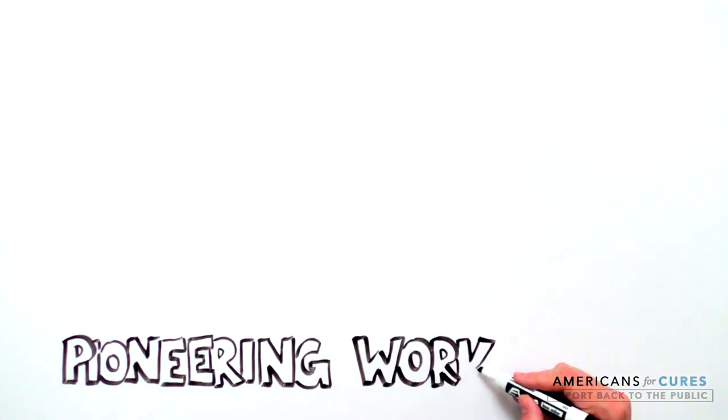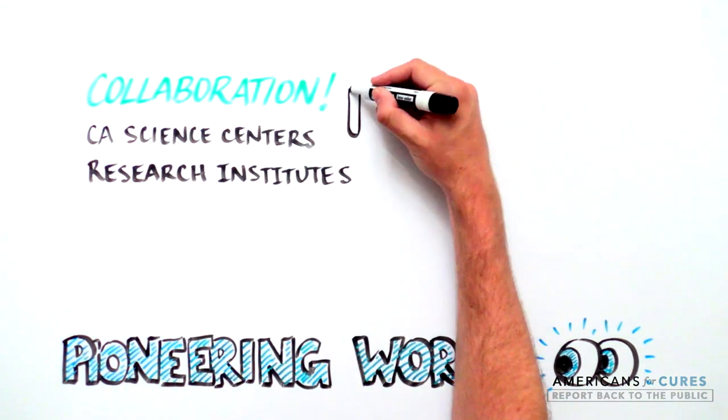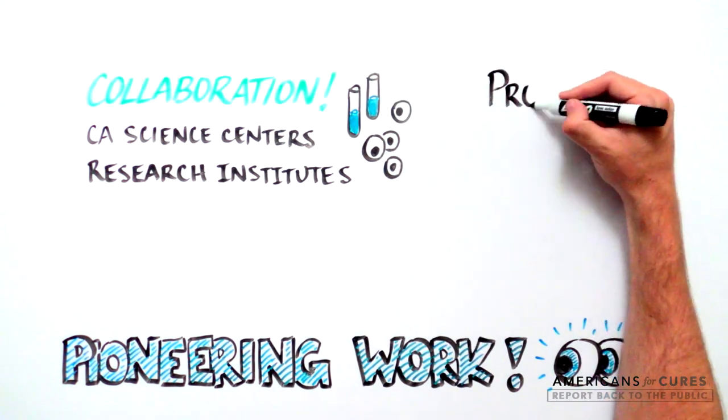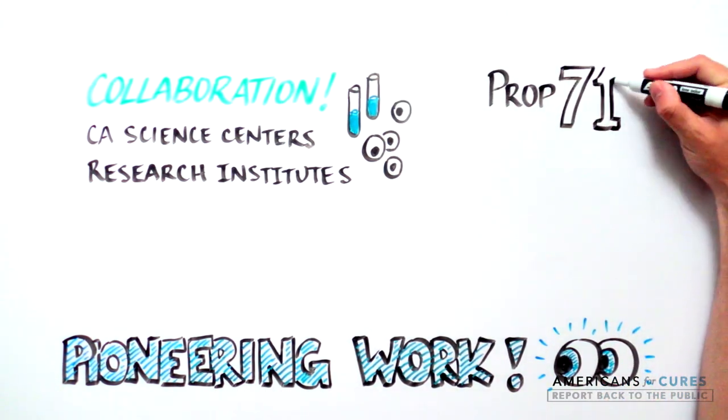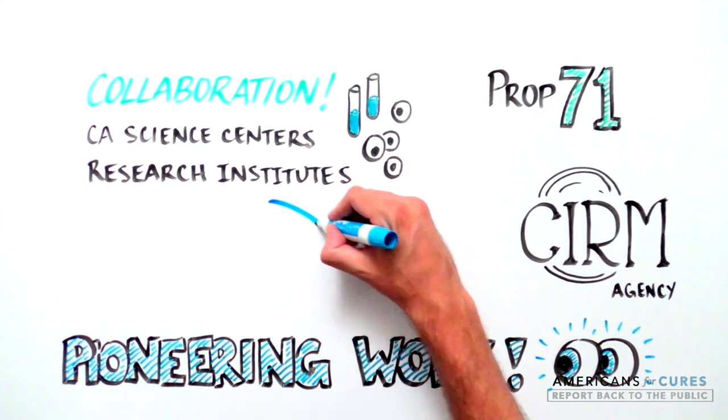This pioneering work is a testament to the power of collaborative research among California's finest scientific centers and research institutes, to the importance of biomedical research funding from California's Proposition 71, and to the stem cell therapy funding agency it created, CIRM.